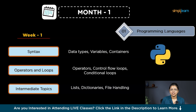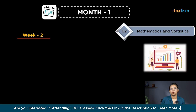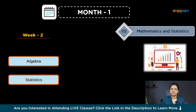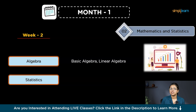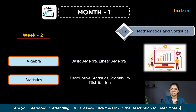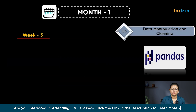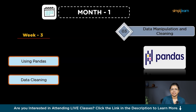Week two focuses on mathematics and statistics. Start with basic algebra concepts, then move on to linear algebra, which is crucial for understanding data relationships and transformations. You should also learn about statistics — a vital tool in data science. This includes descriptive statistics, which help summarize data, and probability distributions, which provide insights into data patterns and likelihoods.